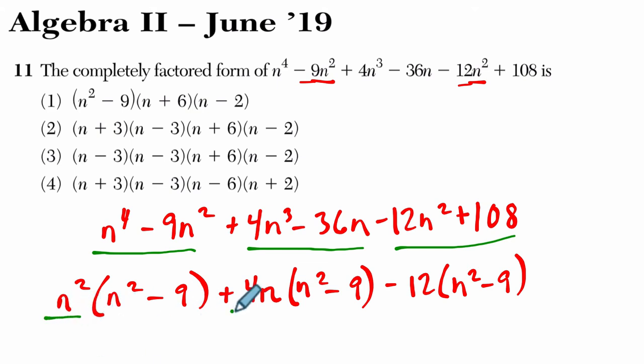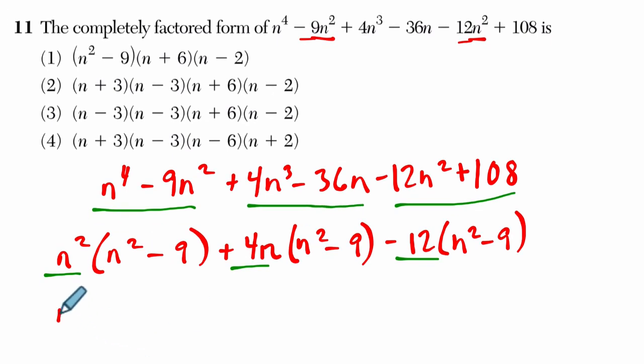And the nice thing about this is that you have this trinomial here. And what you can do is factor out the binomial n-squared minus 9. So we factor that out. And then in each case, what's left over is the first term, n-squared, second term, 4n, and third term, negative 12 of a trinomial.